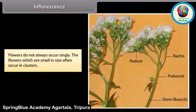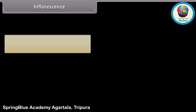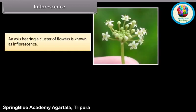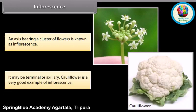Flowers do not always occur singly. Flowers which are small in size often occur in clusters. An axis bearing a cluster of flowers is known as an inflorescence. It may be terminal or axillary. Cauliflower is a very good example of inflorescence.